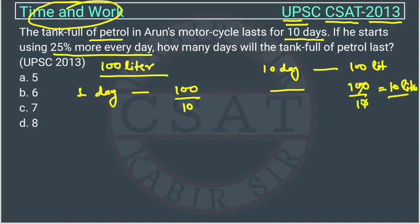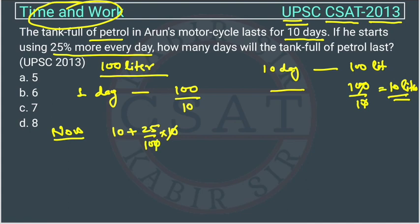So in one day Arun is using 10 liters of petrol. But now he is using 25% more. So it will be like previously he was using 10, and now 25% more — 25% of 10 is 2.5. So this will be 10 plus 2.5, which equals 12.5. So now daily he is using 12.5 liters of petrol.